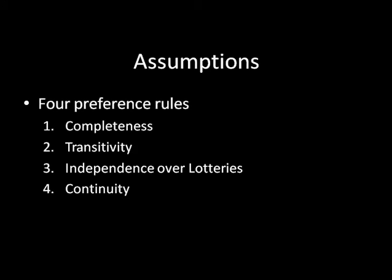We said that they need to have four preference rules. We've gone over the first two of them: completeness and transitivity. Those both dealt with outcomes that occurred with certainty. And we said that if your preference relations were complete and transitive, then you are rational by the way we define rationality in game theory. Now we're also concerned in game theory about outcomes that do not occur with certainty — these lotteries that we've discussed in the past. And so we need to have some preference relation rules about those lotteries for everything to make sense. We're going to start out today by talking about independence over lotteries before we get to continuity later.